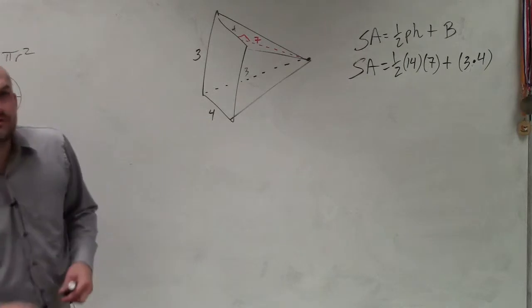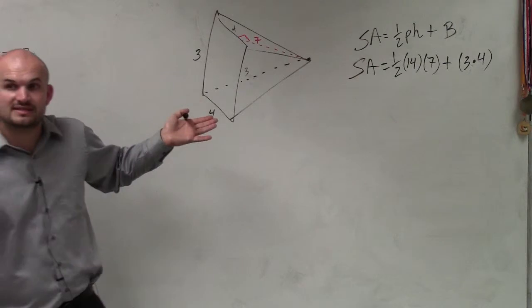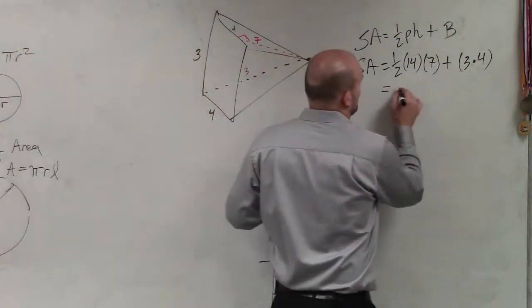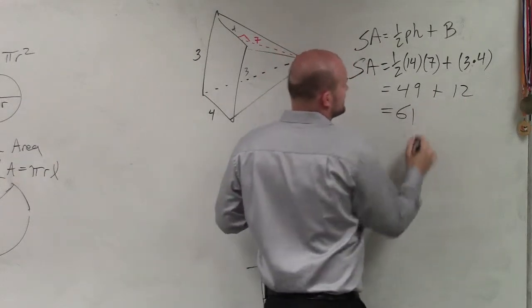So now to go ahead and figure the rest of this out, I just do one-half times 14 is 7. 7 times 7 is 49 plus 3 times 4 is 12 equals 61.